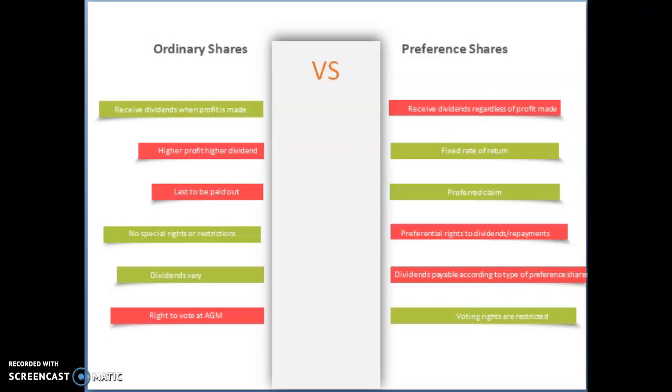With ordinary shares, dividends vary from year to year, so they fluctuate and change. Whereas with preference shares, dividends are payable according to the type of preference shares. Remember, the non-cumulative preference shareholders will not receive any outstanding dividends from previous years.